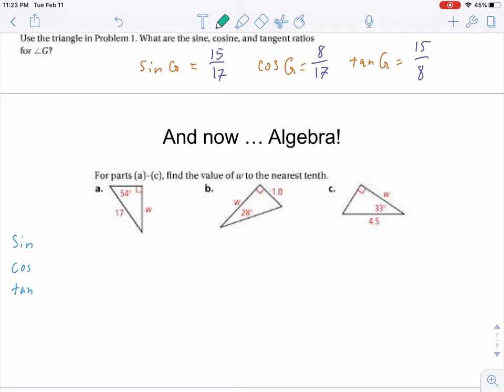The first thing we need to do is decide which of the trigonometric ratios to use. Sine is opposite and hypotenuse. Cosine is adjacent and hypotenuse, while tangent is opposite and adjacent. To figure out which one to use, we just need to look at the angle in question, here's 54, and where our variable and our constant are.